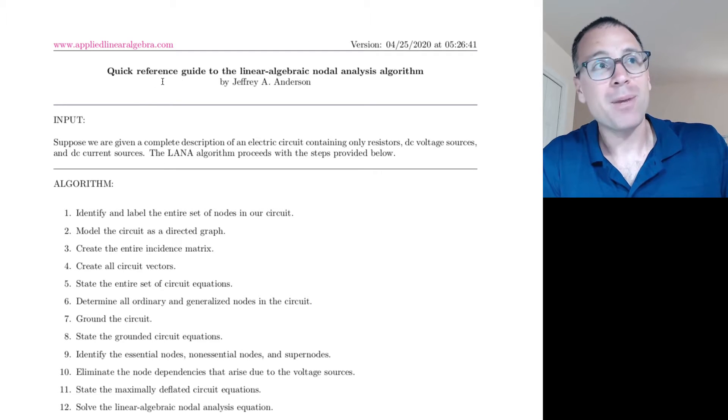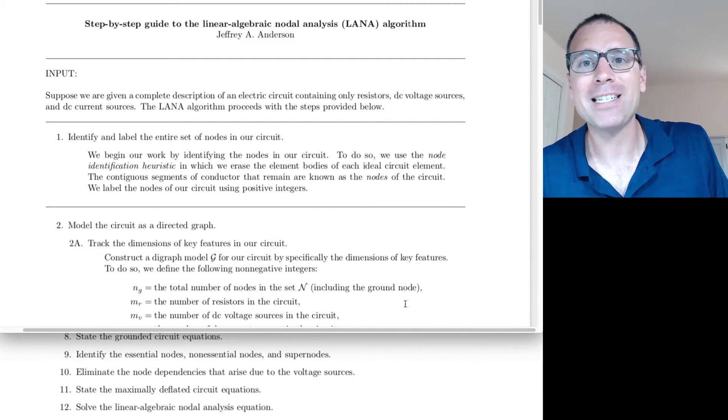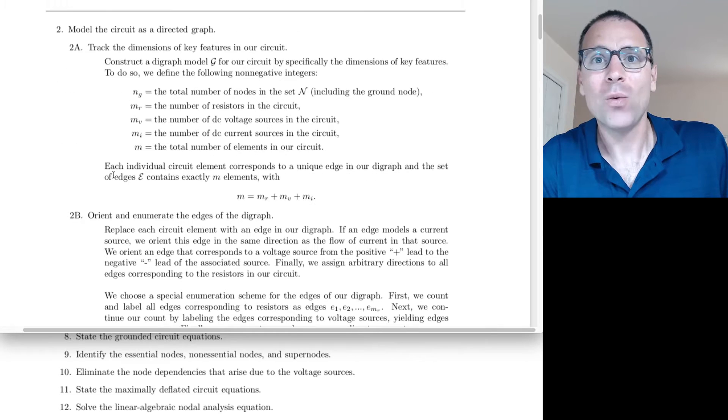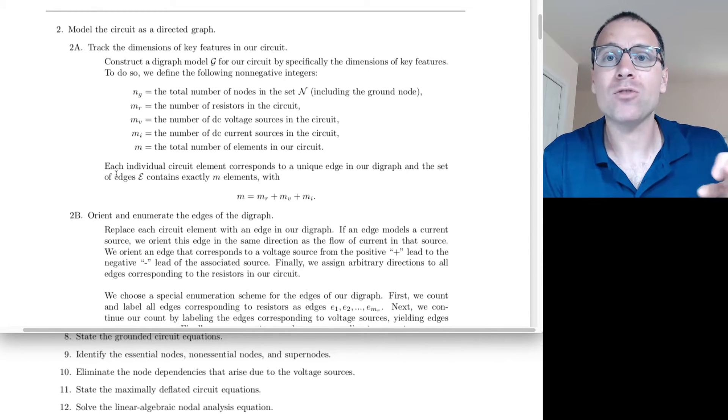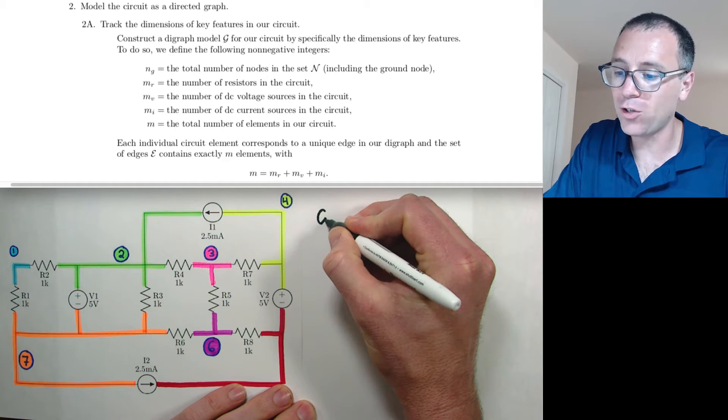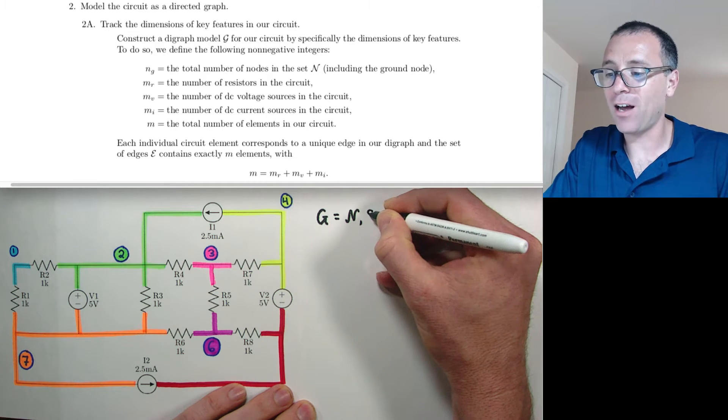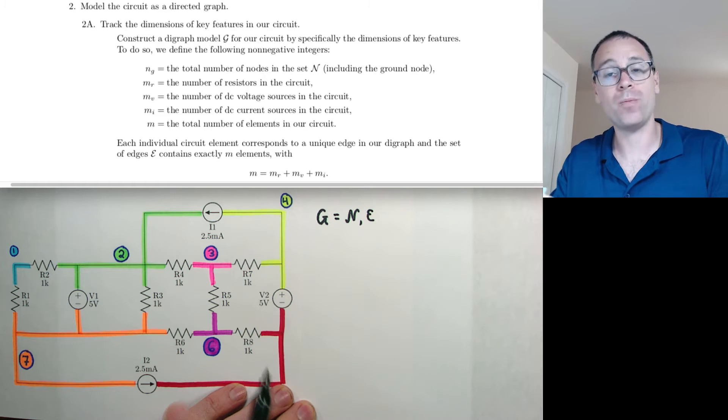The reason that I call this document a quick reference is because it doesn't give a lot of background information about how to actually accomplish that step. To find more detailed background information, check out the step-by-step guide to the linear algebraic nodal analysis algorithm. We see in step two, model the circuit as a directed graph. There's actually three separate sub-steps that we have to complete.